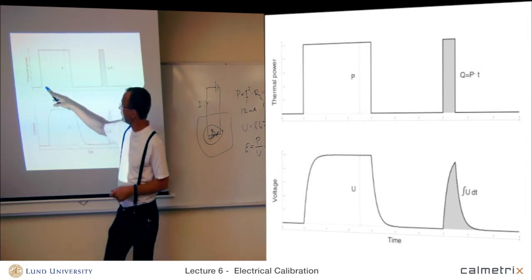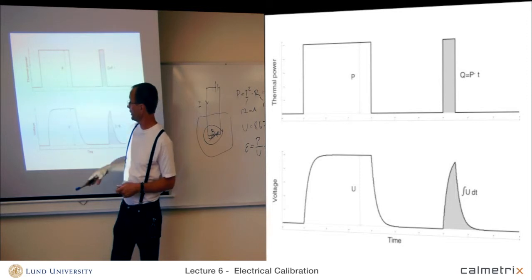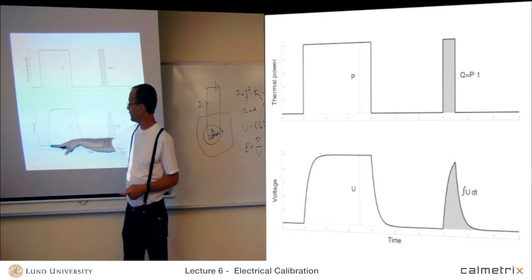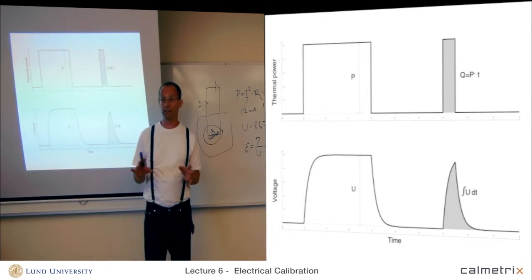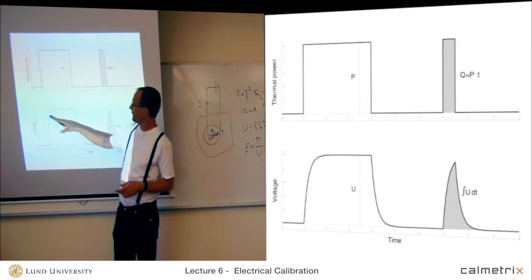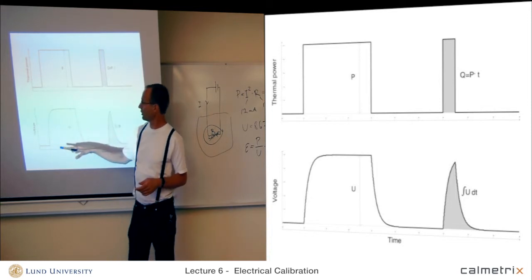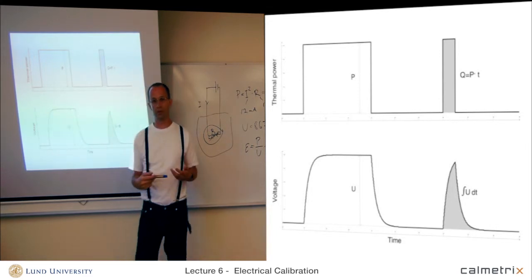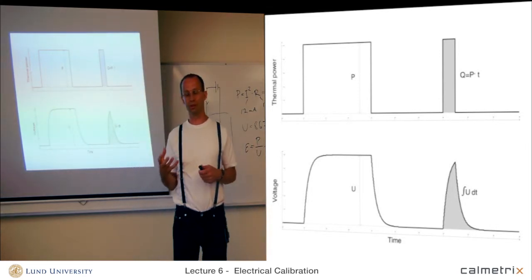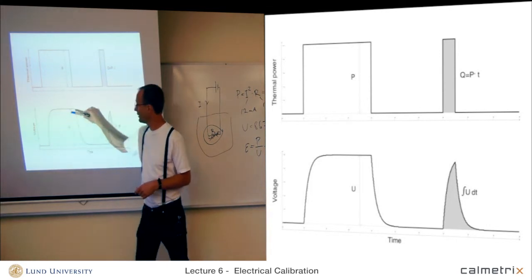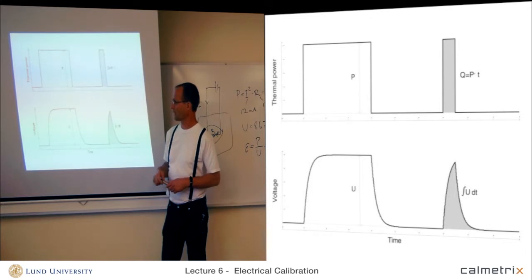As you see, the thermal power input is like a rectangular pulse or a square pulse. But the voltage output from the calorimeter, it doesn't have the same shape. And as we come back in a later lecture, how we can correct for that. The reason it goes up asymptotically like this is like an exponential function, and there's also an exponential function going down here, is that there is a thermal inertia of the sample, of the interior of the calorimeter. So, it takes some time to heat the calorimeter up to a certain level, and it takes some time for the heat to flow out or to leak out of the calorimeter.